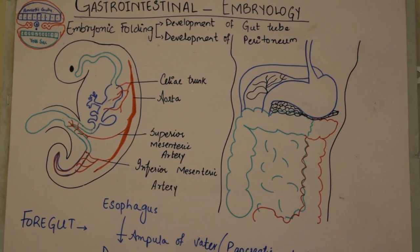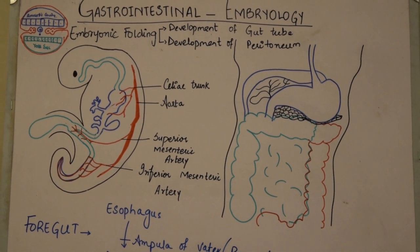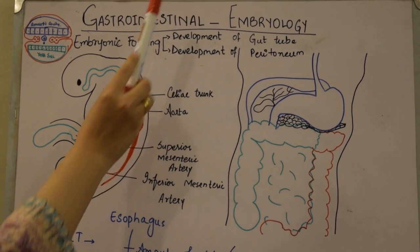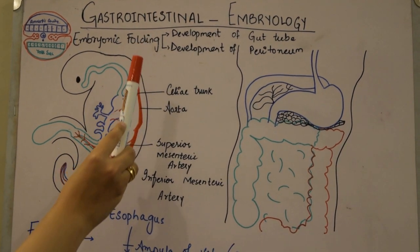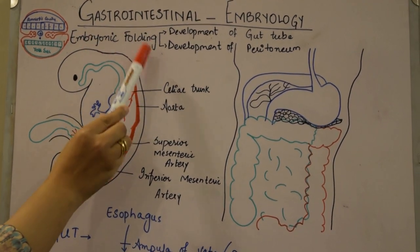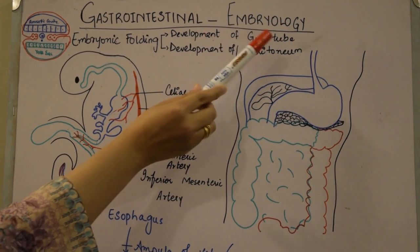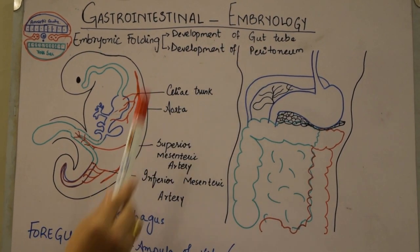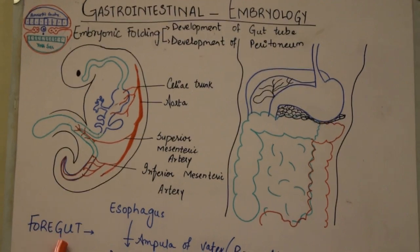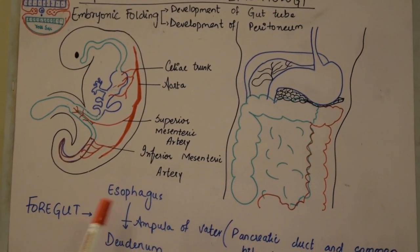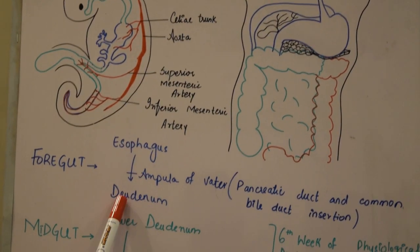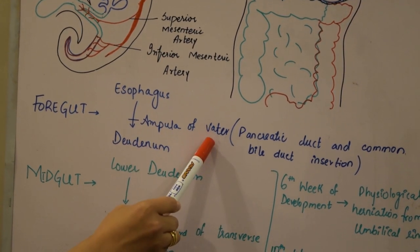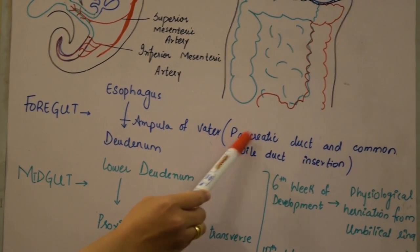In this video I'm going to tell you about gastrointestinal embryology. Starting first, I'll cover embryonic folding, which includes development of the gut tube and the peritoneum. After that, I'll discuss the foregut, which starts from the esophagus and ends at the second part of the duodenum, where the ampulla of Vater is located — the point of insertion of the pancreatic duct and the common bile duct.